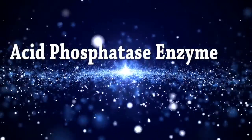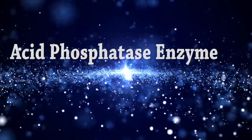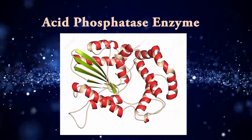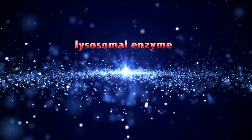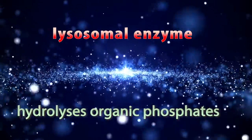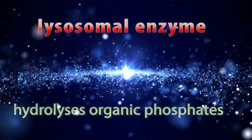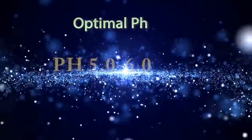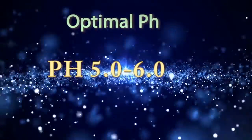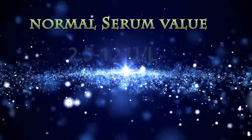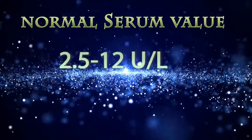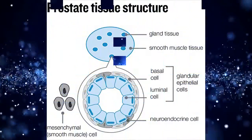Acid phosphatase is a ubiquitous lysosomal enzyme that hydrolyzes organic phosphates at an acidic pH. Its optimal pH is between 5.0 to 6.0. The normal serum value of acid phosphatase is 2.5 to 12 units per liter.